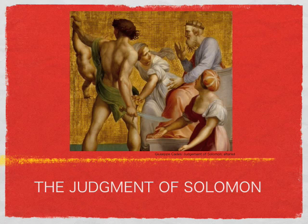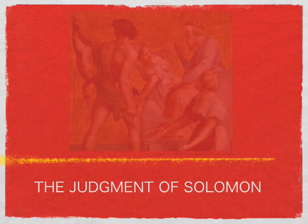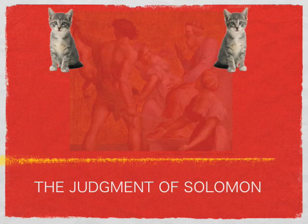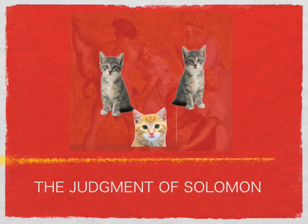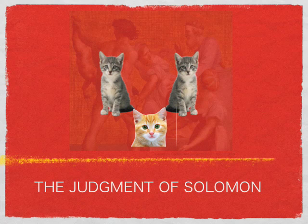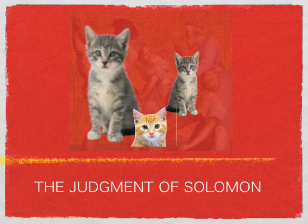Let's make it a little bit more abstract. There are agent 1 and agent 2 as well as an object. Agent 1 claims the object, and agent 2 does the same. If agent 1 values the object more, then she should get it. How do we do it?